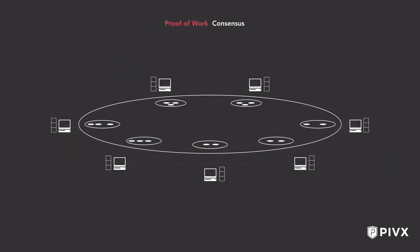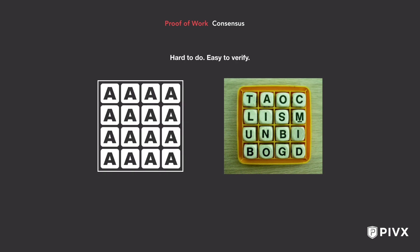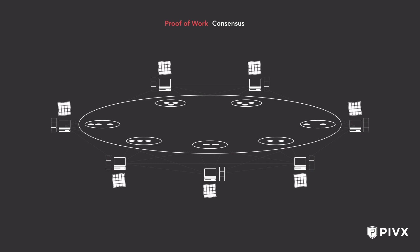Proof-of-work. In a proof-of-work system, in order to lead consensus and earn rewards, the nodes compete to be the first to solve a cryptographic puzzle. To understand this conceptually, imagine that each node has a tray of dice. However, instead of dots, these dice depict letters on each side, similar to the game Boggle. Except here, the objective is to shake the tray until all A's appear on top — something that's very hard to do, but easy to verify. In a proof-of-work system, the node that accomplishes this first gets to lead consensus. Each shake of the tray is an attempt at solving the puzzle. Therefore, the faster a node can shake the tray, the more likely it will arrive at the solution before the other nodes.